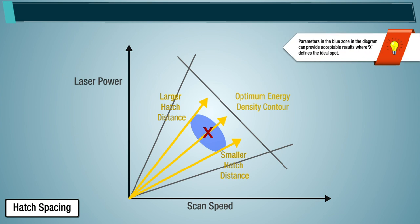Note: parameters in the blue zone in the diagram can provide acceptable results, where X defines the ideal spot. Hatch spacing similar to the beam spot size or smaller is generally recommended.